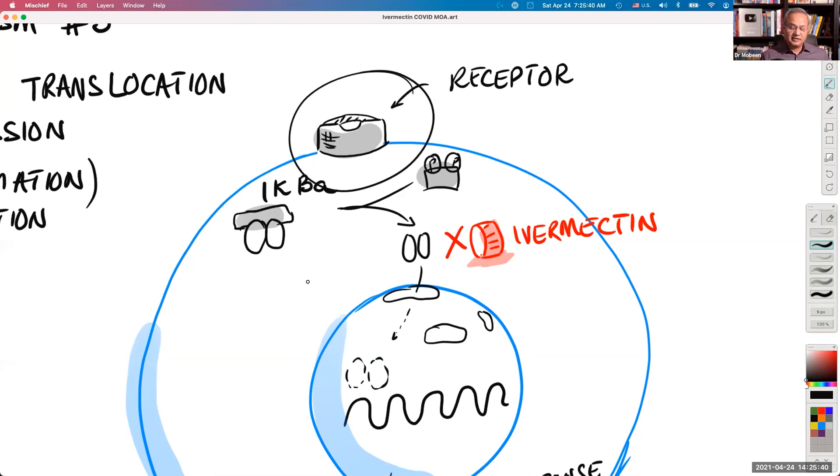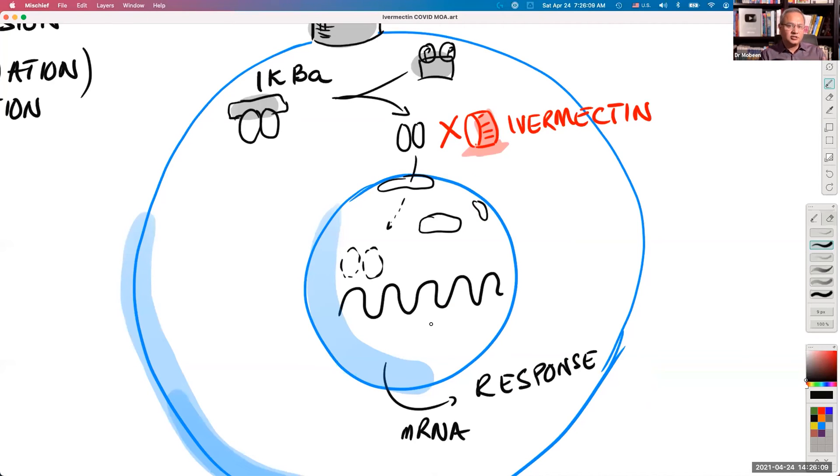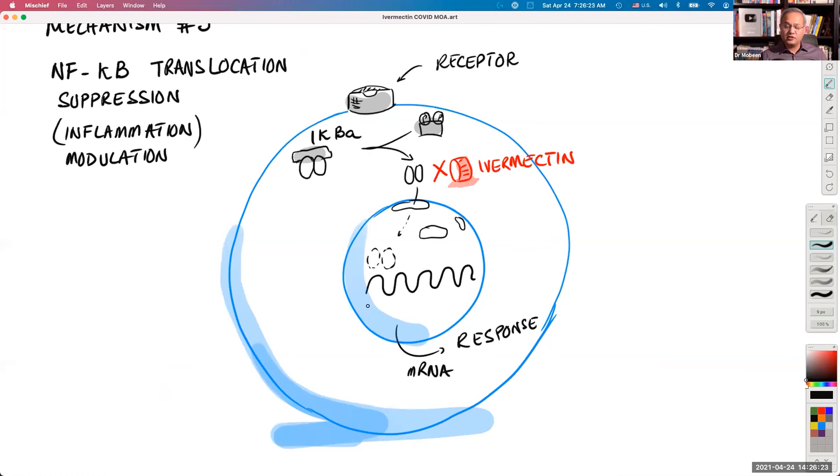Now when some signal arrives at the cell or some stress occurs or some reactive oxygen species are produced or cell is under attack by a virus, then what happens is this protein complex is activated and the activation causes the IκB to be separated and the NF-κB to be separated. This NF-κB then goes into the nucleus and from there various gene expressions occur and various cell responses occur. For us what is important is inflammatory responses. Ivermectin can actually dock with the NF-κB as well and disrupt its function.